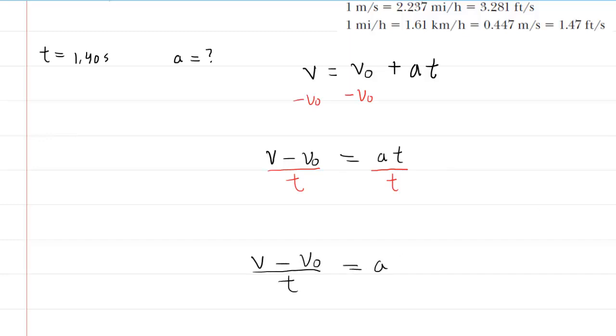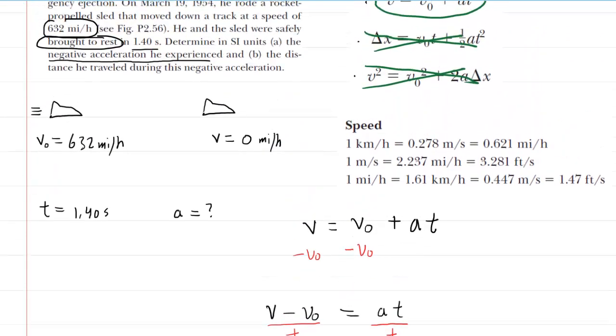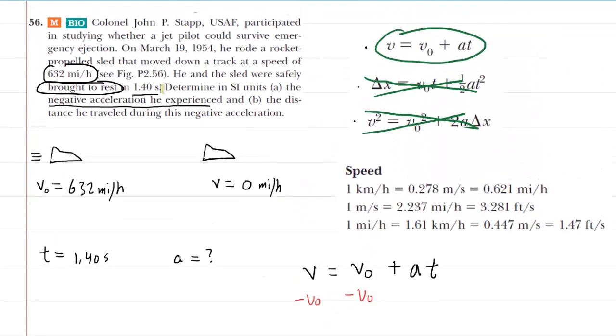The only thing we need to be a little bit careful about in this question is that it requires us to find the answer in SI units, standard units. So standard units for acceleration would be in meters per second squared. And the problem is our velocity, at least the initial velocity, is given in miles per hour.